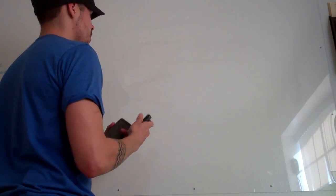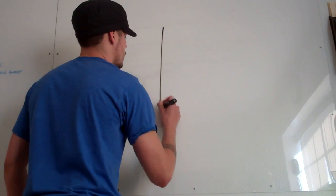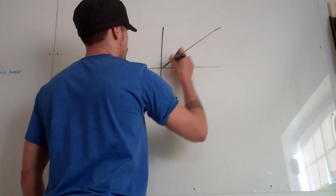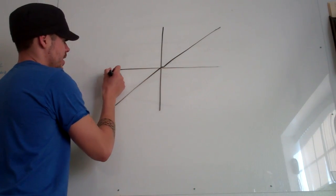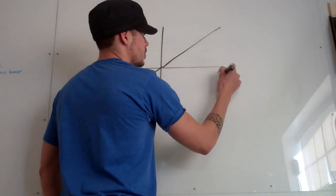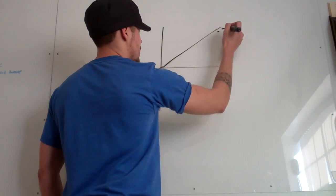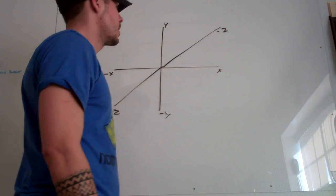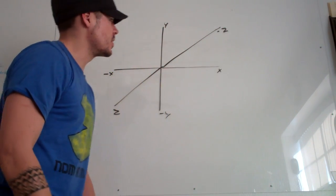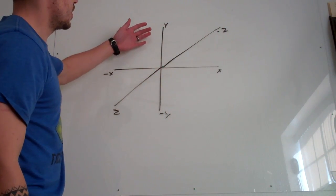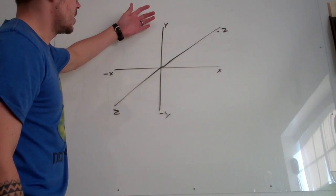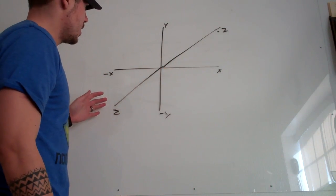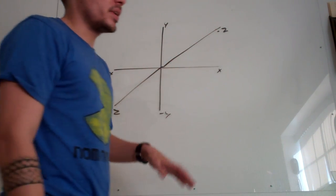Let's say we have a three-dimensional plane. This is the negative x, positive x, we have negative z, positive z, y, negative y. Or, if it's another notation, you might have unit vectors — positive j, negative j, negative i, positive i, positive k, negative k. But we'll just leave it like this for now.